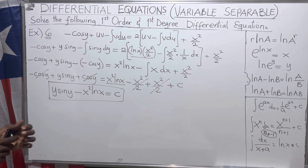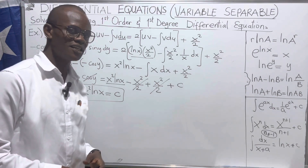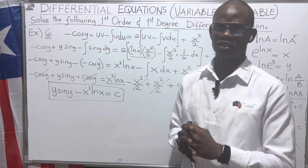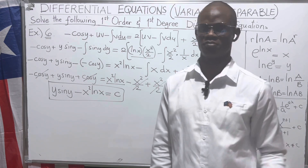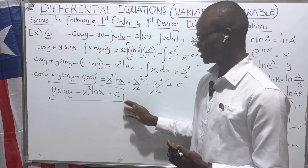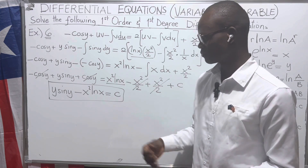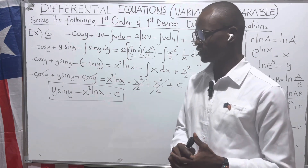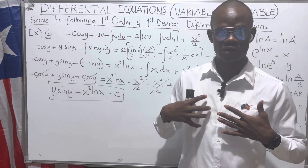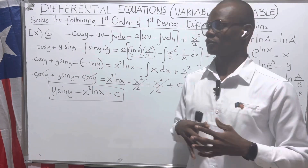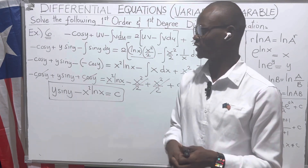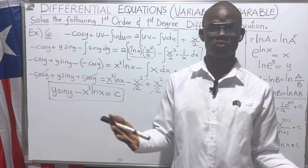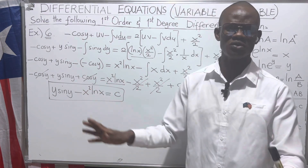This is our final answer. Remember, C is just an arbitrary constant — it can take on any sign or coefficient. Don't worry if a term appears positive when you expected negative; C absorbs all of that. This is the general solution, and it is general because it can take on any form depending on what value C represents.